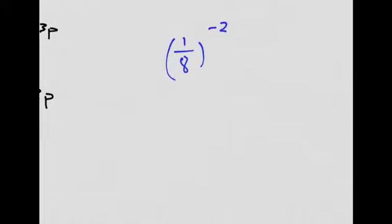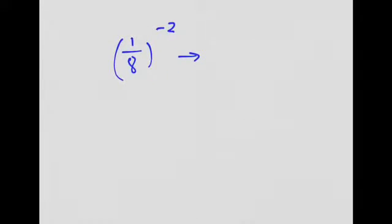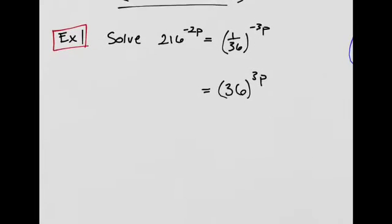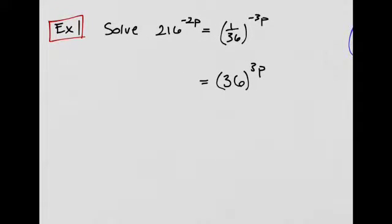Let me just go over the rule again. If I had like 1/8 to the negative 2, since this is negative, that changes to 8 over 1 to a positive 2, which is just 64. So there's a little example for you.